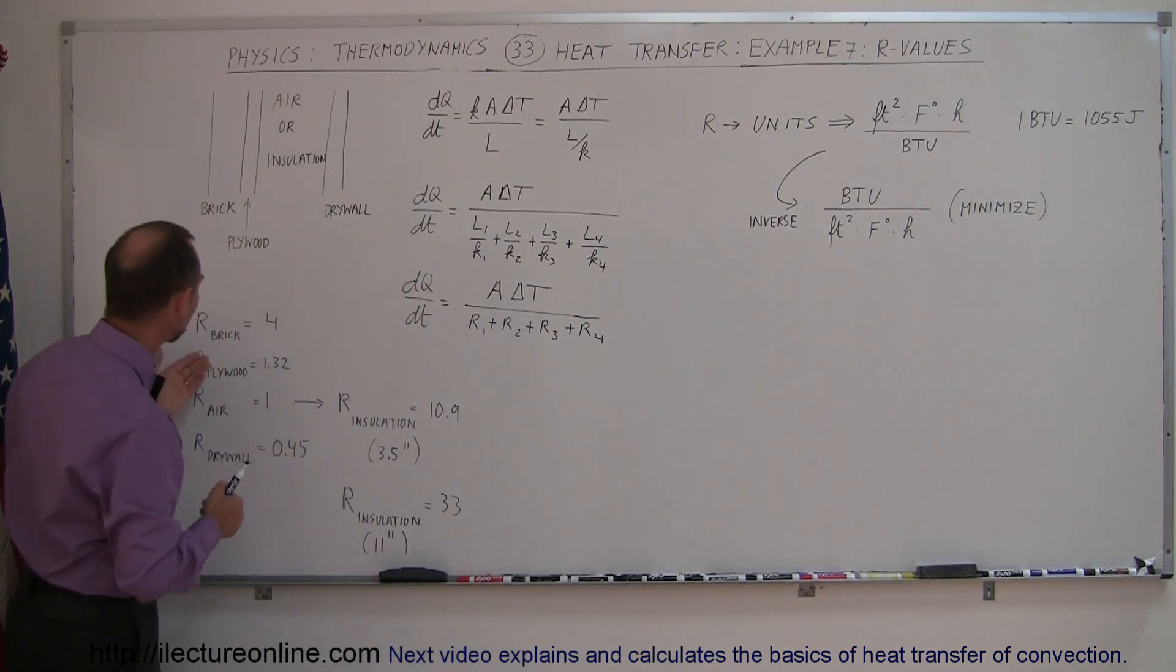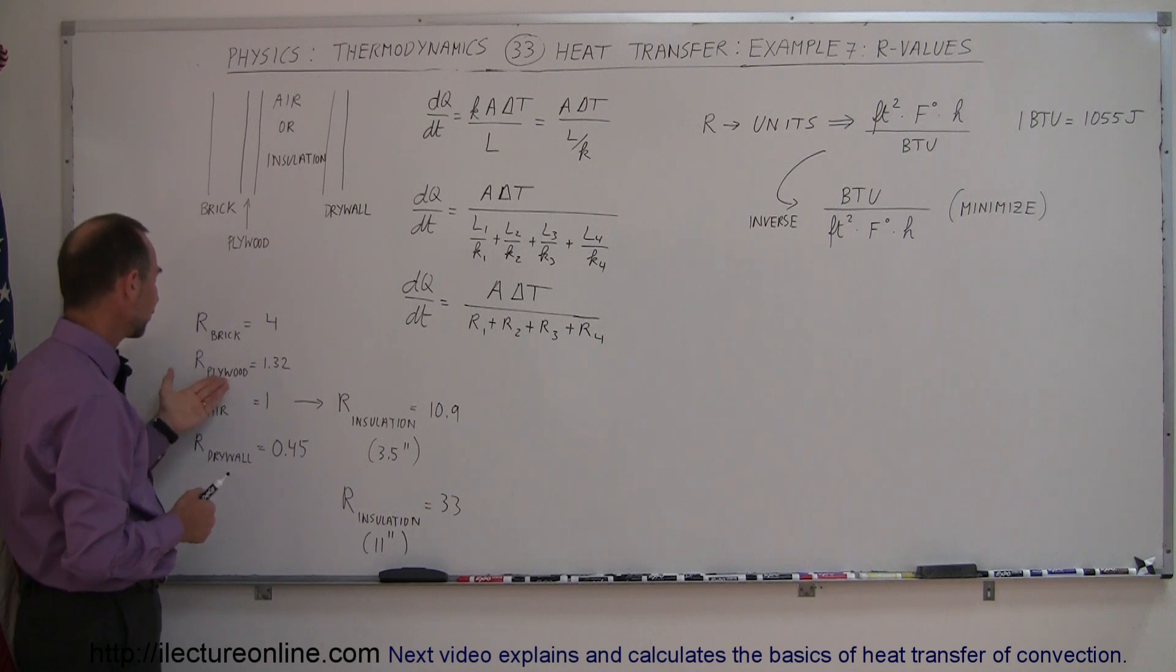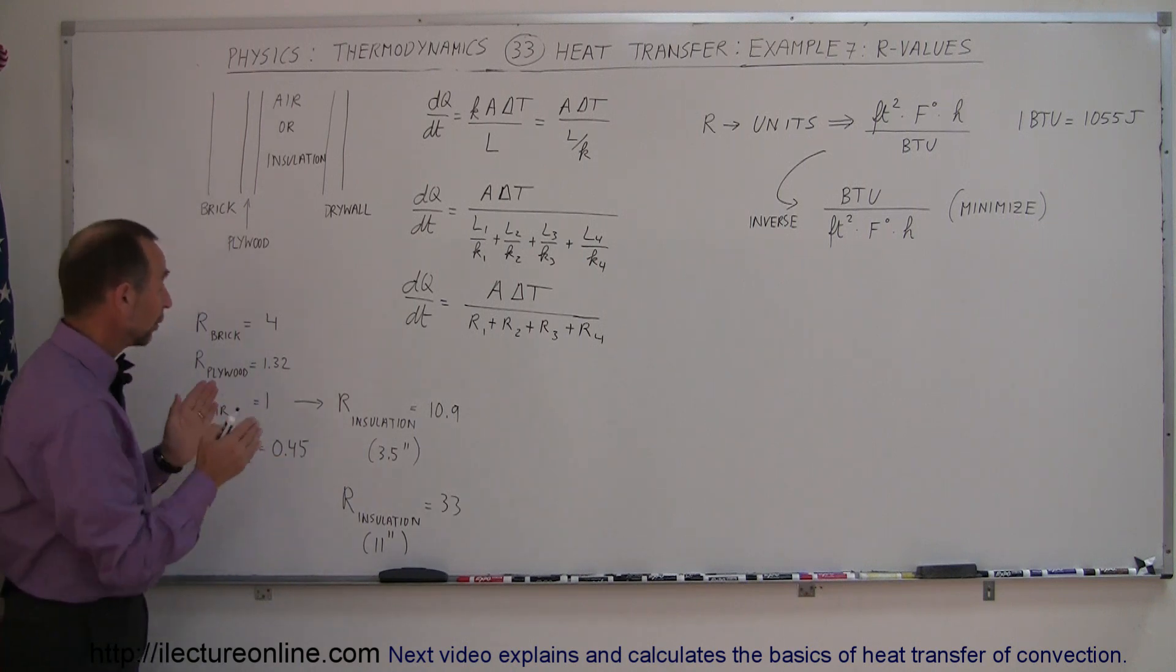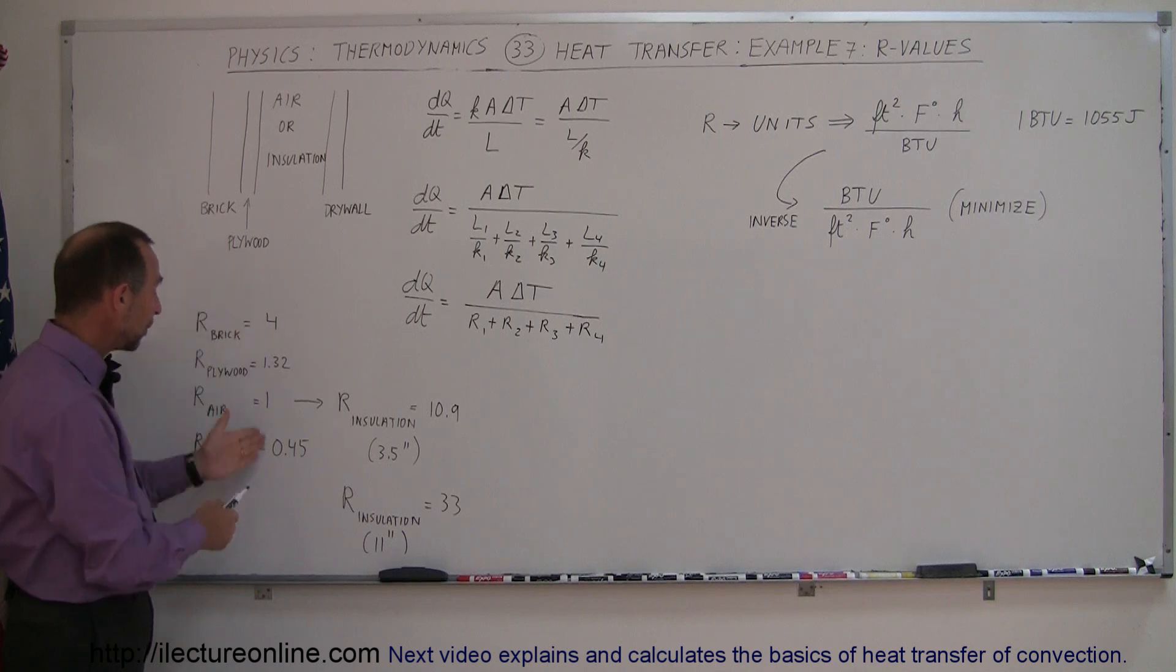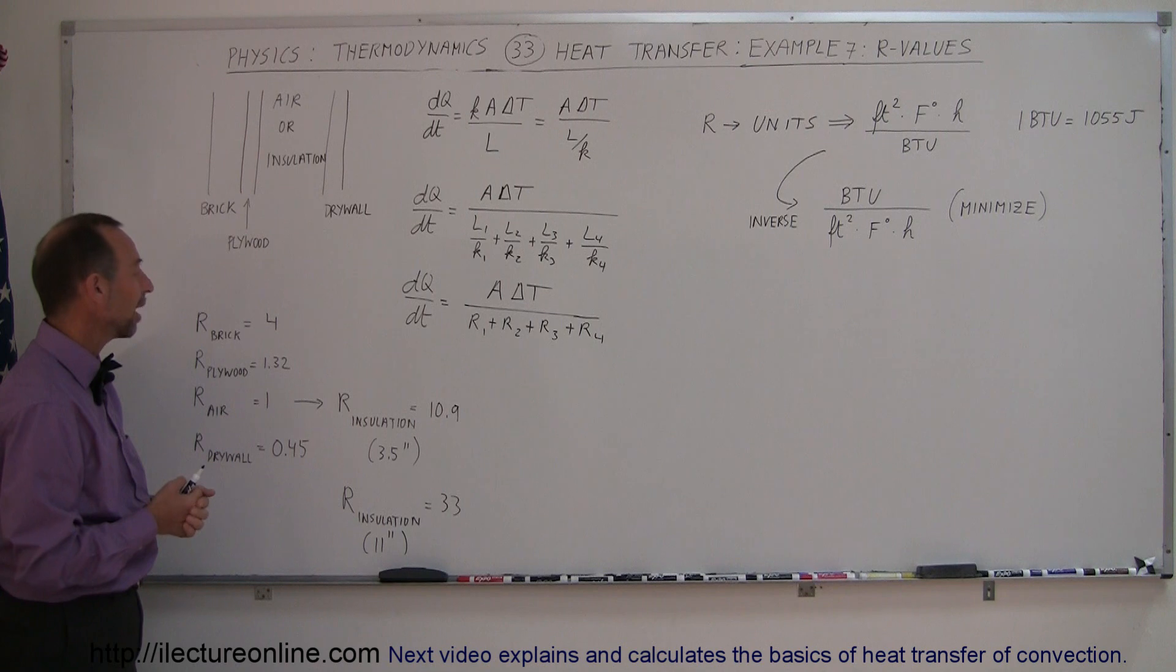So looking at that, you can see that the R-value for a brick wall is about 4, the R-value for the plywood is 1.32, the R-value for air is 1, and the R-value for the drywall is 0.45. Now you want to add those up, and you want the biggest R-value possible for the sum of all the R-values inside.